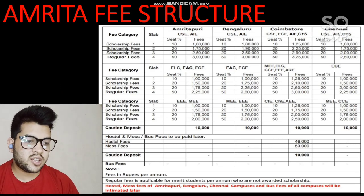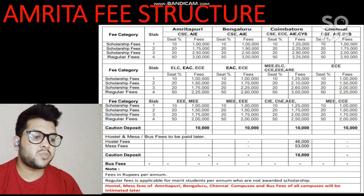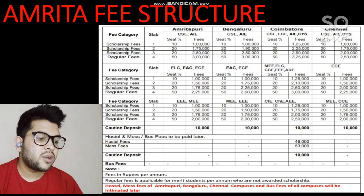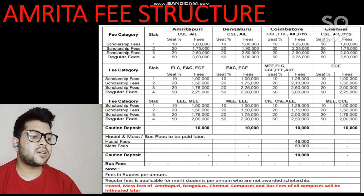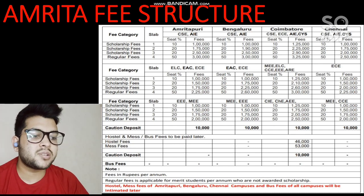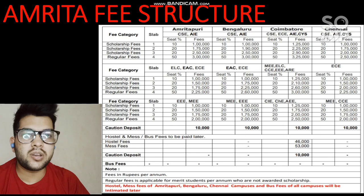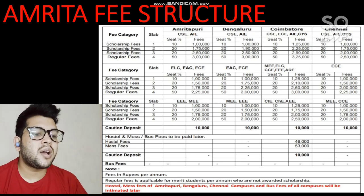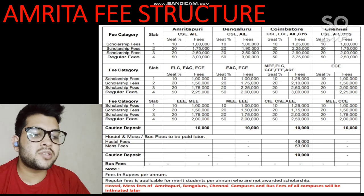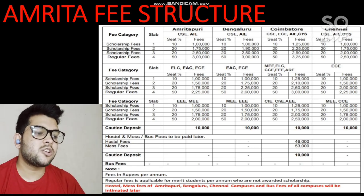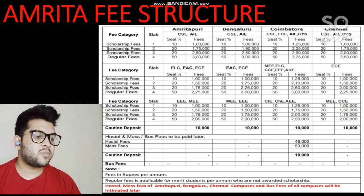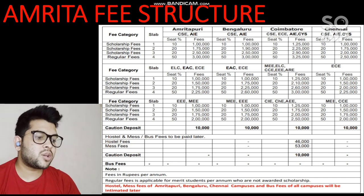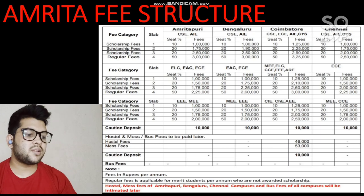You can check all the information by pausing this video, and this information is available on the website also. The key breakdown is: Slab 1 — 10 percent of seats, Slab 2 — 20 percent, Slab 3 — 20 percent, and regular fee — 50 percent of seats in each branch and campus. The fee structure differs by campus; the Coimbatore campus fee is slightly higher than the others.